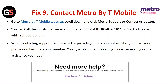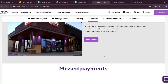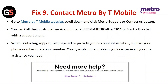Fix 9: Contact Metro by T-Mobile. Go to the Metro by T-Mobile website, scroll down, and click on Metro Support or the Contact Us button. You can call their customer service number or start a live chat with a support agent. When contacting support, be prepared to provide your account information such as your phone number or account number, and clearly explain the problem you are experiencing or the assistance you need.